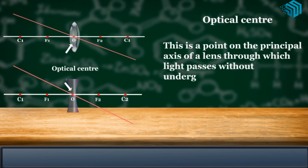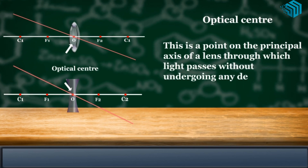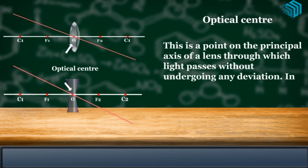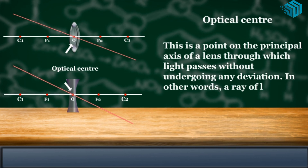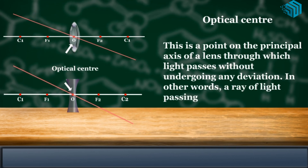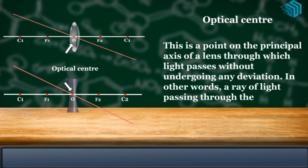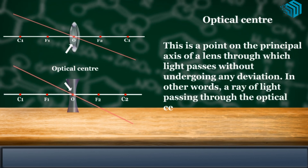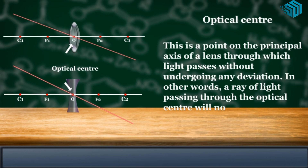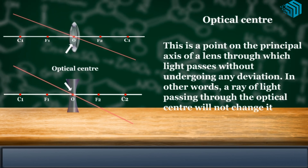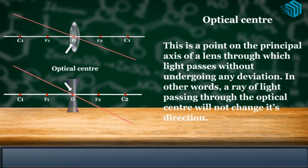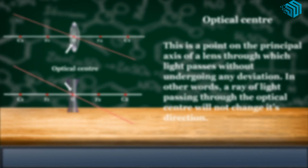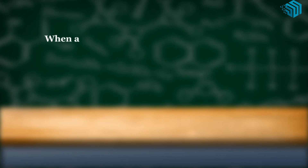Optical center. This is a point on the principal axis of a lens through which light passes without undergoing any deviation. In other words, a ray of light passing through the optical center will not change its direction.